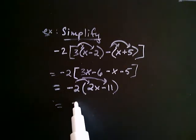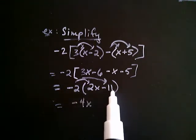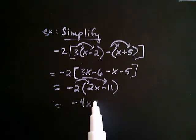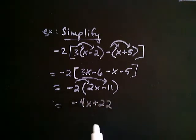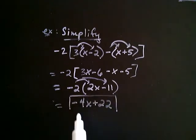So, negative 2 times 2x is negative 4x. And negative 2 times negative 11, you see that? That's positive 22. And that's as simplified as we can make this expression in this case.